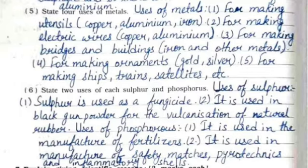Sixth: state two uses each of sulfur and phosphorus. Uses of sulfur: it is used as a fungicide and in black gunpowder; it is used for the vulcanization of natural rubber. Uses of phosphorus: it is used in the manufacture of fertilizers, and in the manufacture of safety matches, pyrotechnics, and inflammatory shells.